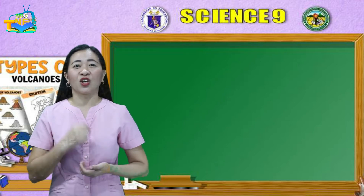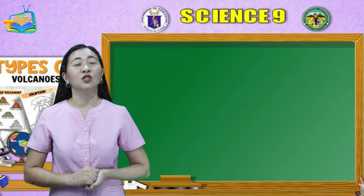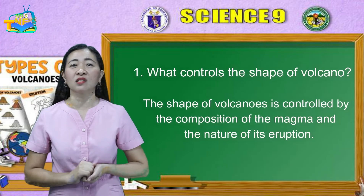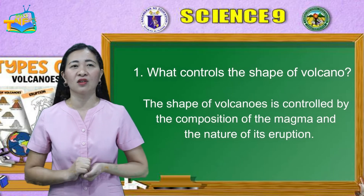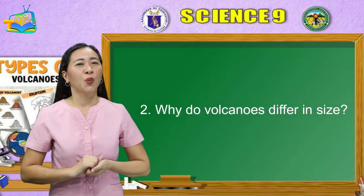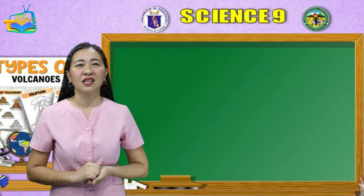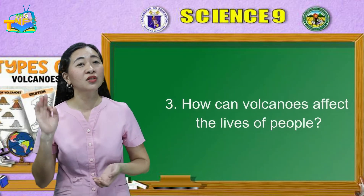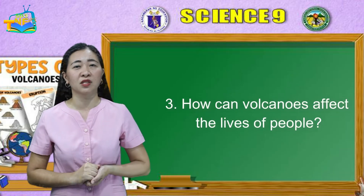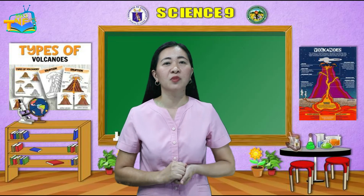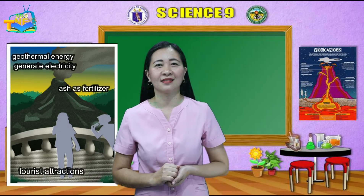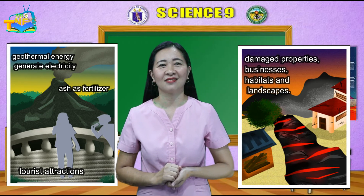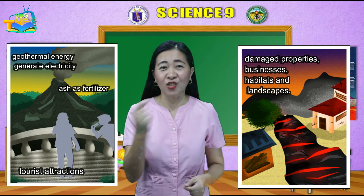Now let's check your answers. Number 1: What controls the shape of a volcano? The shape of volcanoes is controlled by the composition of magma and the nature of its eruption. Number 2: Why do volcanoes differ in size? The size of a volcano is determined by the total volume of lava that has erupted. Number 3: How can volcanoes affect the lives of people? Volcanoes affect the lives of people in both a positive and a negative way.